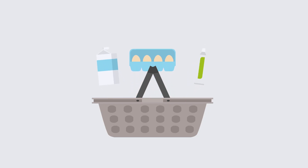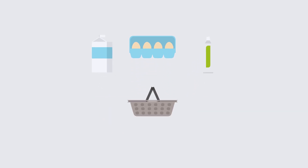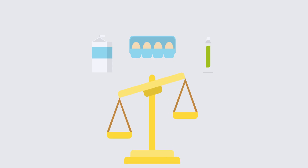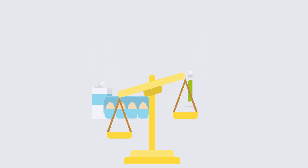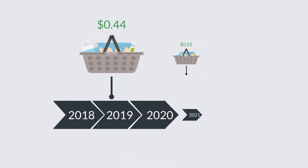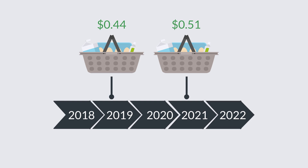The CPI is calculated by averaging the price changes for all items in the specified basket of products, weighing each item in accordance with its significance. The index bases its calculations on a base year, therefore changes are frequently presented as percentage changes to reflect earlier index levels.